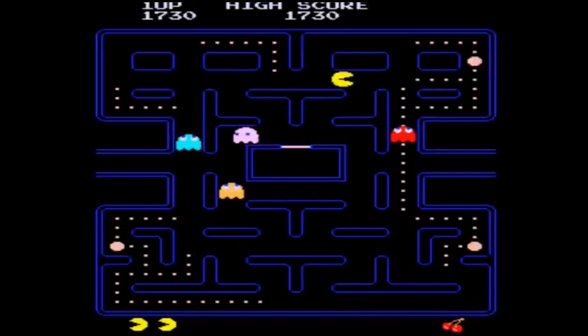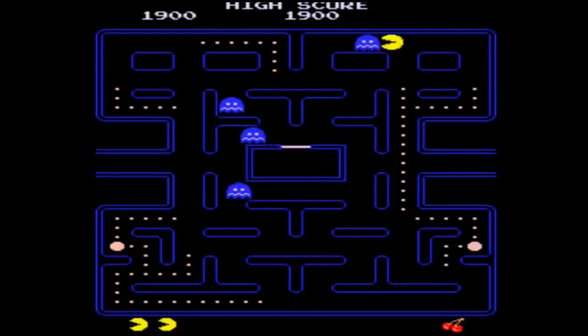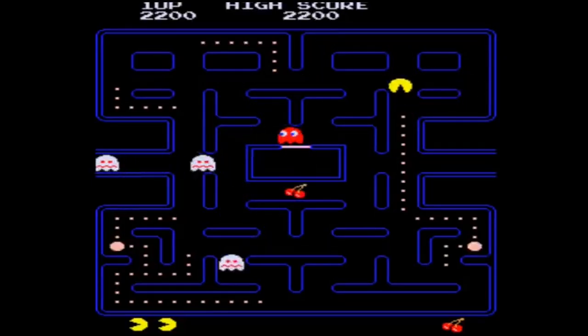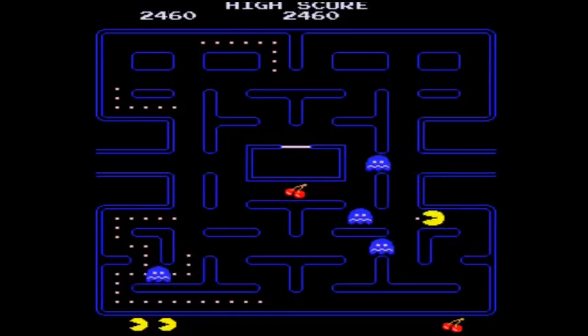The ghosts move in a straight line until they encounter a junction. At that junction, the ghosts will either choose the path closest to the player, or pick a random route. Which one they choose is different per ghost. Some will choose the path towards the player more often, while others have more random behaviour.